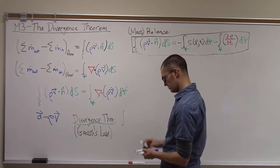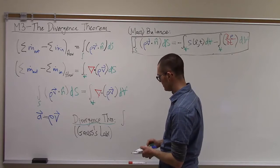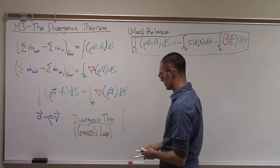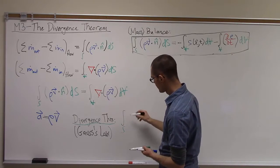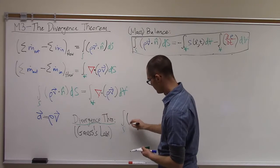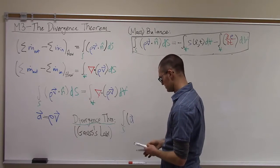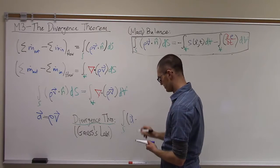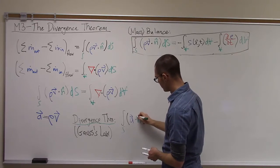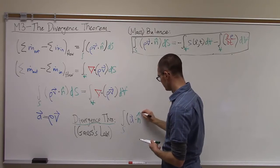The divergence theorem is stated as the integral over a surface of some vector field A dotted with the outward normal to that surface, dS,